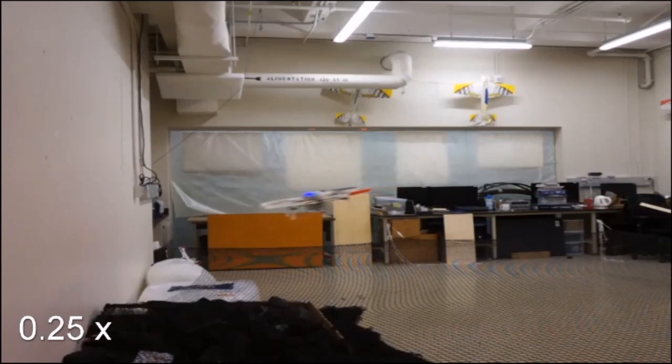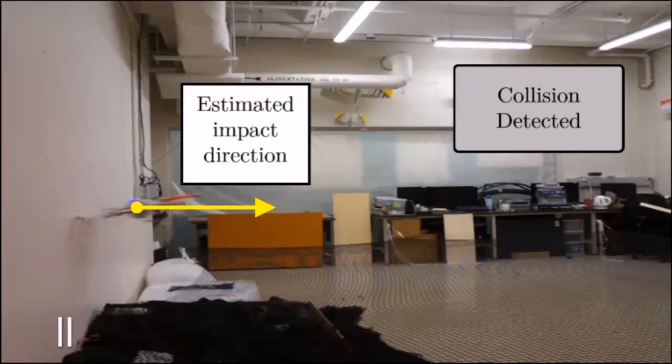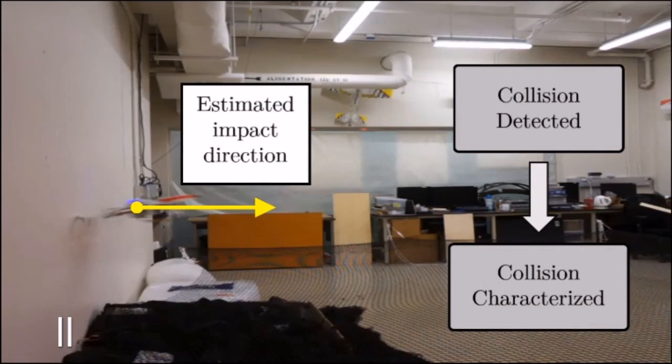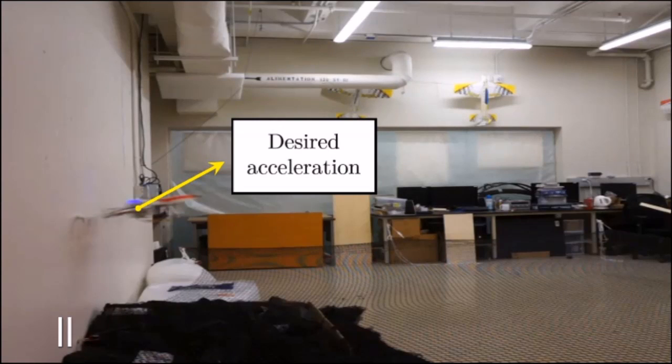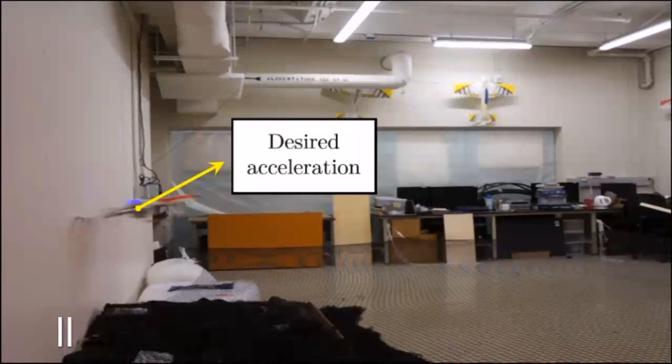The quadrotor first detects the collision using an accelerometer and estimates the direction of the impact. Fuzzy logic is then used to quickly characterize the intensity of the collision. This intensity value is used to generate a desired acceleration pointing away from the wall.